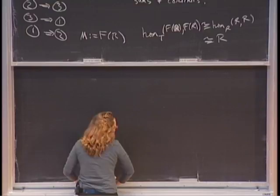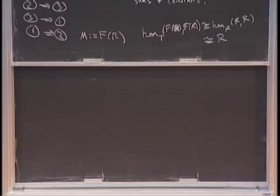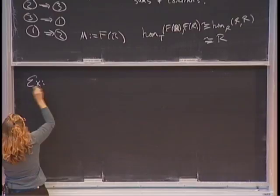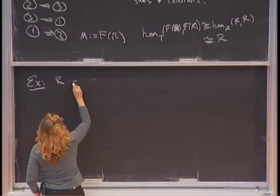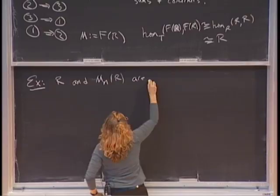That's the sketch of the classical situation. Now I should give an example: the standard example for classical Morita theory is that R and the n×n matrices over R are Morita equivalent. There are many other interesting examples, but I'm going to save time to give more interesting examples in the other settings.